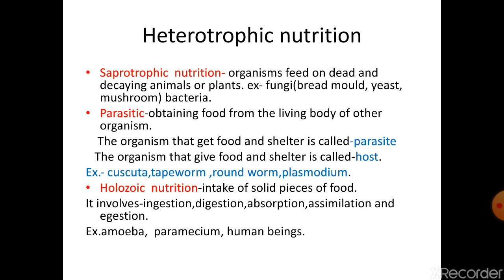Parasitic nutrition is also a type of heterotrophic nutrition involving two organisms: one is the parasite and another is the host. The host gives everything to the parasite, but in return the parasite gives nothing to the host. Examples among plants include Cuscuta, also called Amarbel in Hindi, and Dodder. Animal examples include tapeworm, roundworm, and Plasmodium.